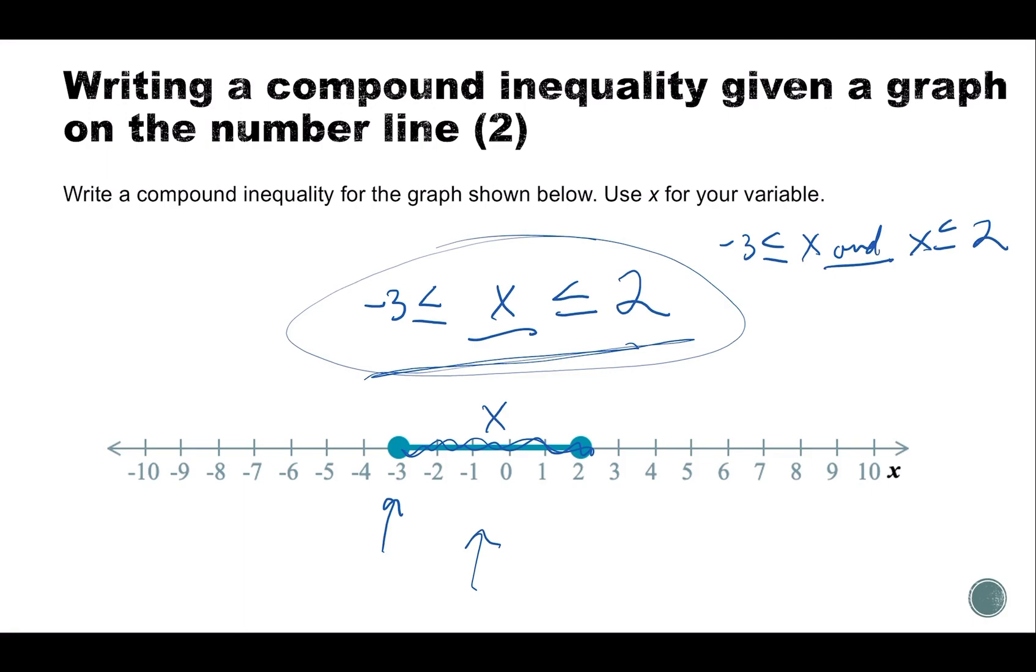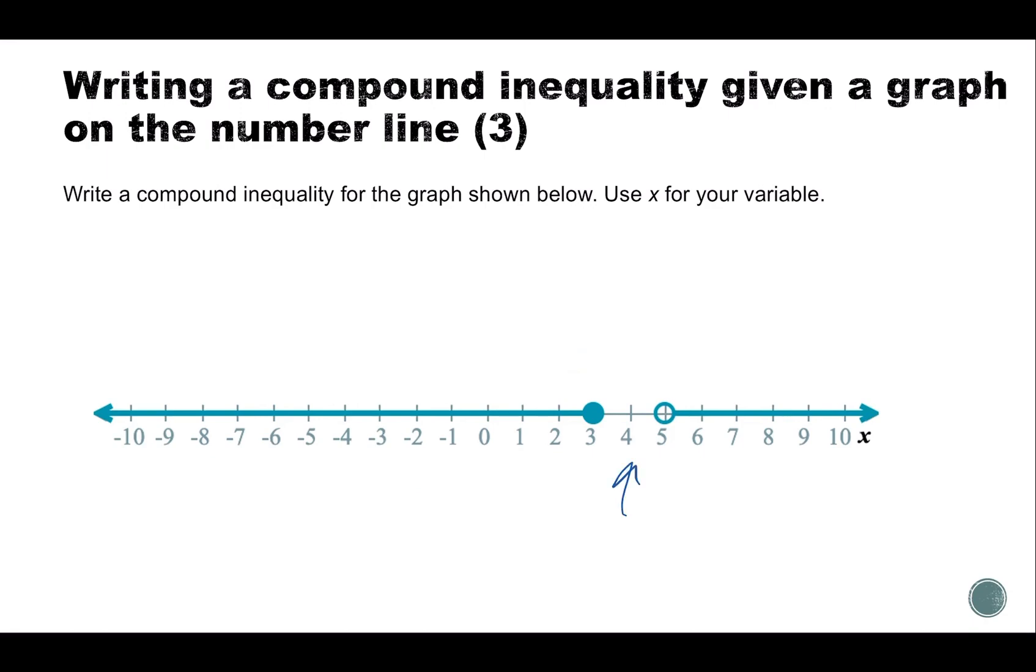Example three. We have a gap, so that's definitely going to be an 'or'. I have x is less than or equal to three because it's a closed dot. Or x is greater than, not greater than or equal to, just greater than because there's an open circle, five.